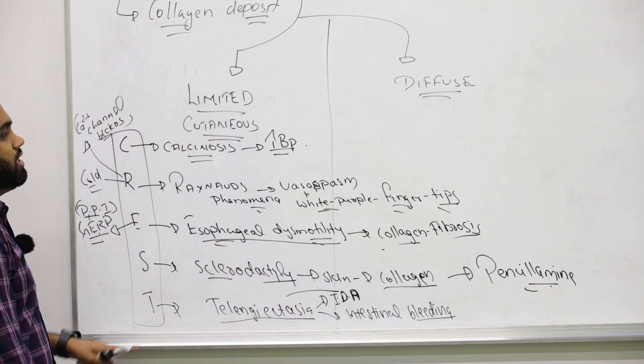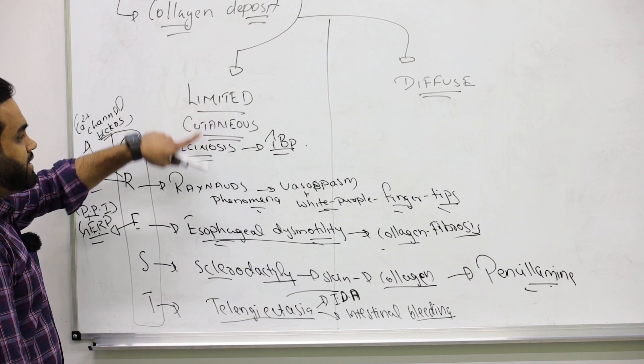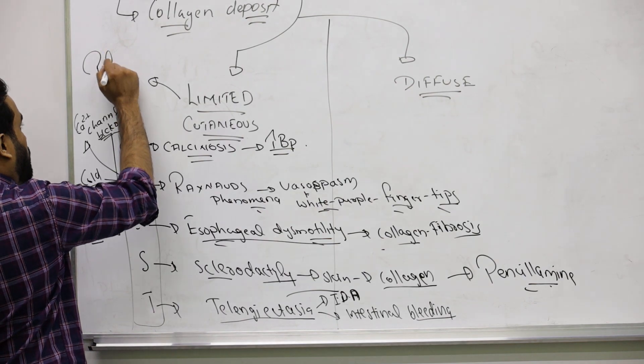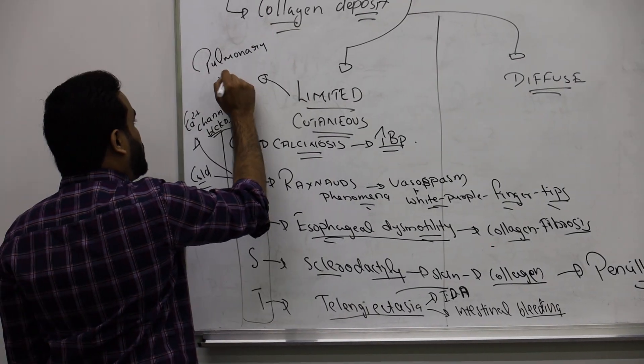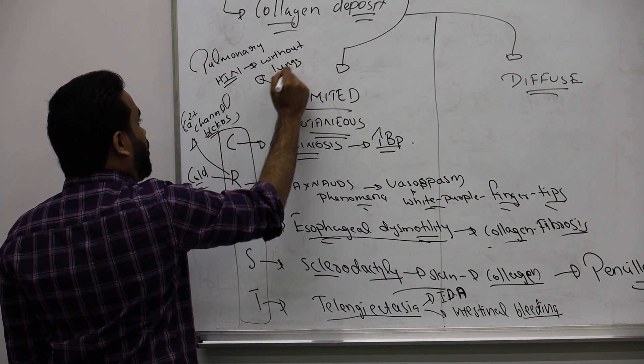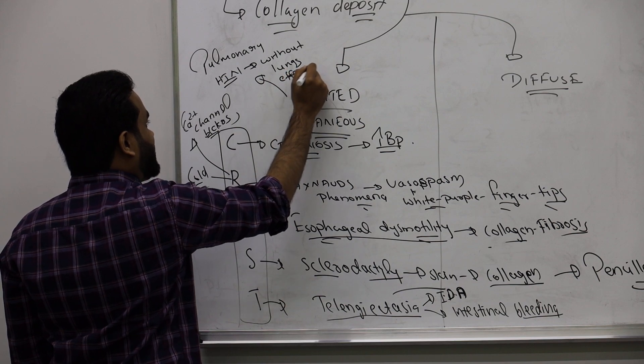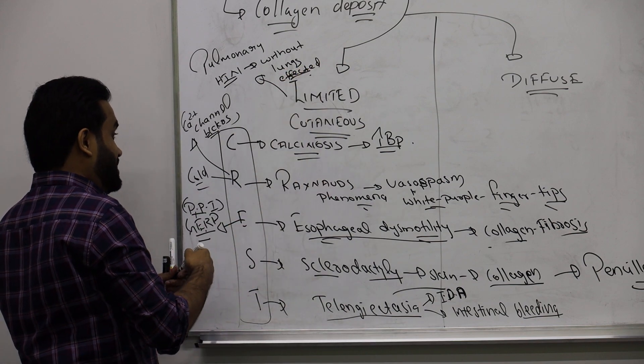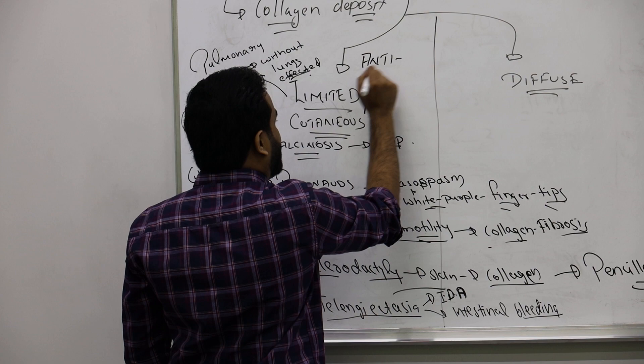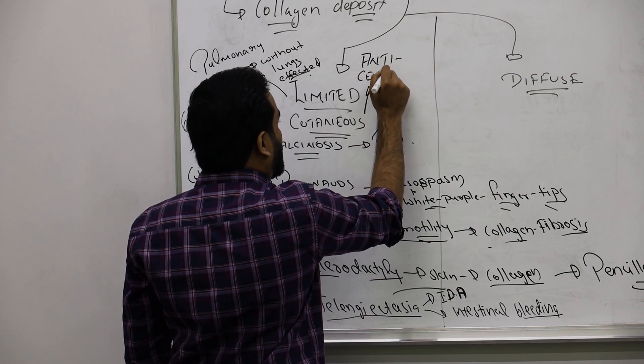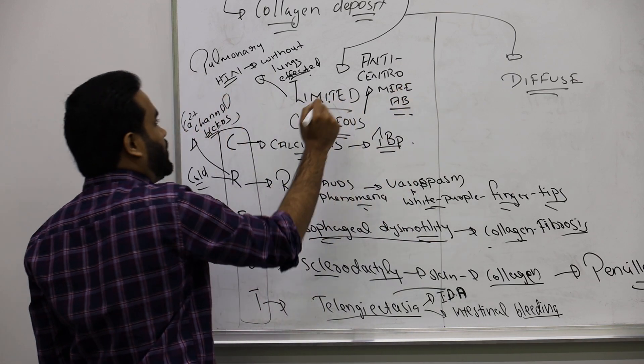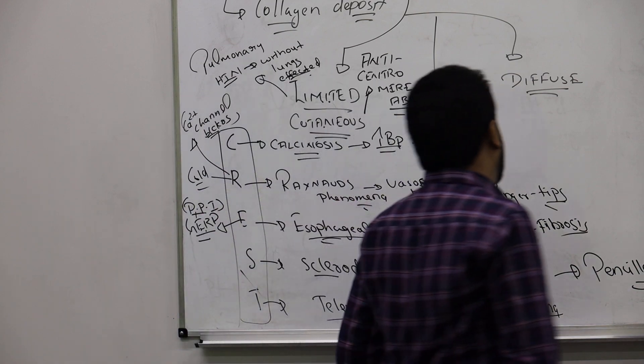These are the features we mainly see with limited cutaneous scleroderma. You will also have pulmonary hypertension, but the lungs are not affected - no internal organs are affected here. This is autoimmune, so the main antibody for limited CREST syndrome is anticentromere antibody for limited cutaneous scleroderma.